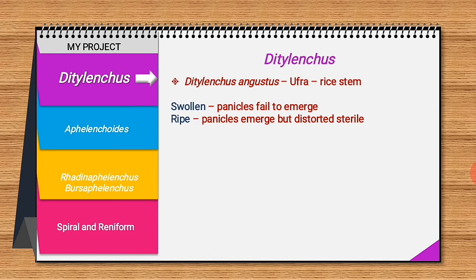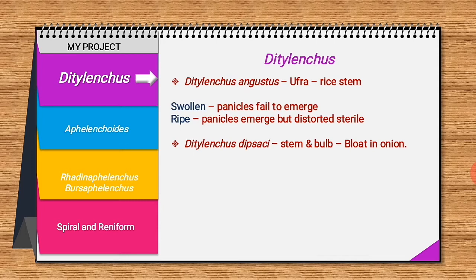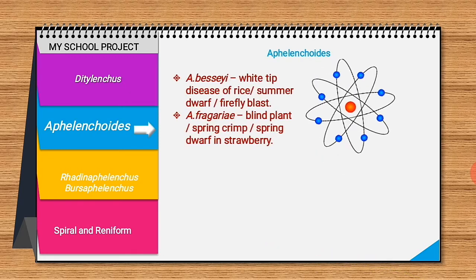Regarding Ditylenchus, Ditylenchus angustus causes ufra disease in rice stem. This disease has two types: swollen ufra, where rice panicles fail to emerge, and ripe ufra, where the panicle emerges but is distorted and in a sterile condition. Ditylenchus dipsaci is the stem and bulb nematode causing bloat of onion — stunted growth, discoloration of bulbs, and swelling of stem. Ditylenchus destructor causes potato rot.